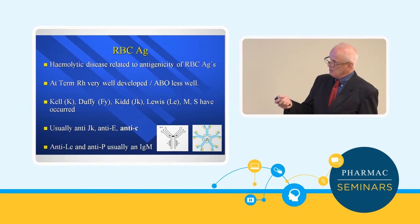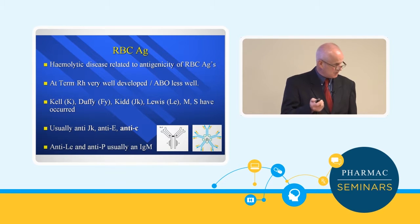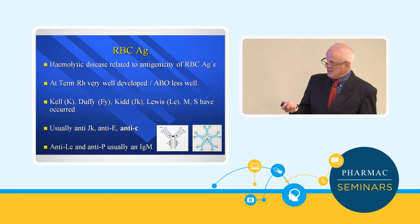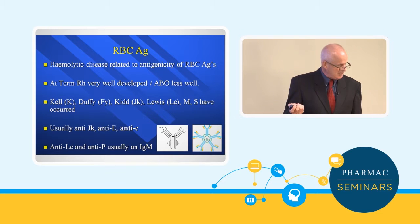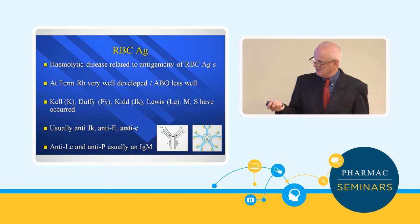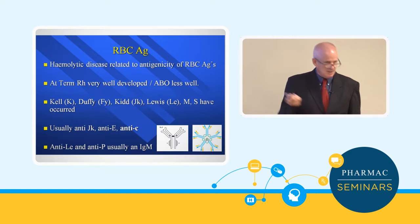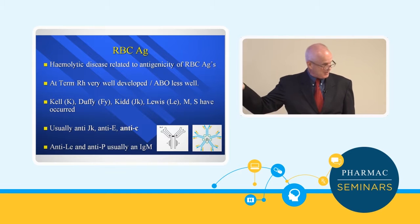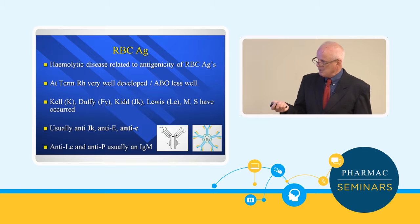In the term newborn, Rhesus antigens are very well developed, which is why Rhesus disease is so aggressive. ABO antigens are not quite as well developed but are present. Other blood groups — Kell, Duffy (now Fy), Kidd (JK), Lewis, M and S — are poorly developed antigens on the neonatal red blood cell, so even if the mother has these antibodies, it's not necessarily going to cause problems. The most significant of these minor antibodies are usually anti-Kidd, anti-big-E, and anti-little-c.